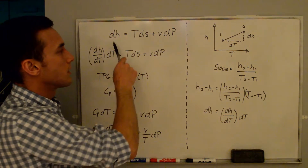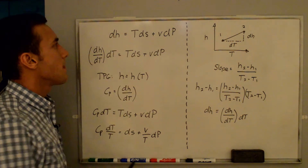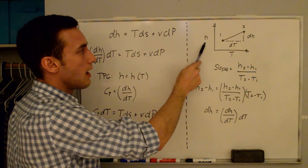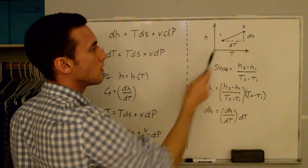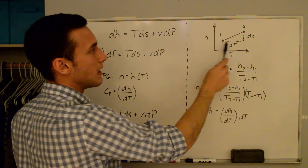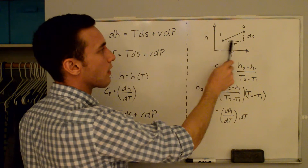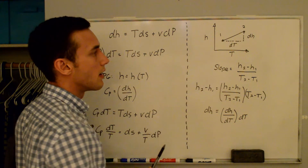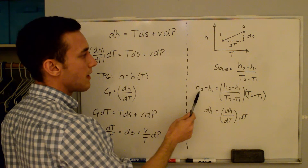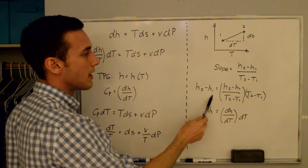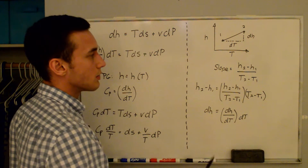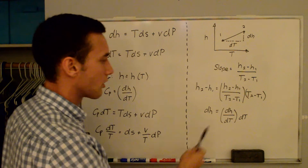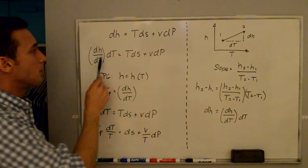I'm going to start with the combined first and second law of thermodynamics in enthalpy form H. I want to replace dh so that we can plug in the specific heat at constant pressure. Looking at this plot of enthalpy versus temperature, going from state one to state two, we can define the change in enthalpy by defining a slope and multiplying by the change in temperature. So dh equals dh/dt times dt — that's the slope times dt.